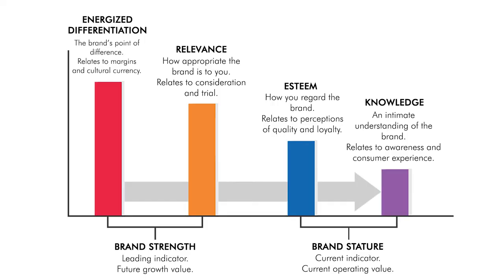According to the Brand Asset Valuator, brand equity can be calculated with four factors. First, energized differentiation considers how different a company is perceived by consumers, its capability to move forward in the market, and its leadership. Second, relevance tracks the degree of suitability and brand attractiveness — its quality and loyalty level. The last one is knowledge, which keeps track of consumers' awareness and familiarity with a brand. Energized differentiation and relevance are a future projection of a company's growth and value — together they represent brand strength. Esteem and knowledge indicate past performance and present value — together they represent brand stature.